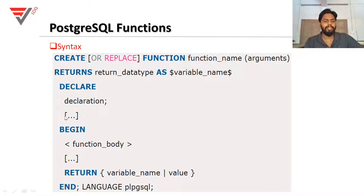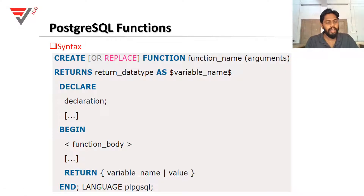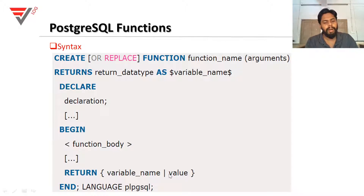Then in the program structure, the DECLARE section is where we declare variables. Then the BEGIN block, the body, then END. We have already covered the PL/pgSQL structure. When we define this particular function, the function is defined in the beginning. Then END semicolon. Then LANGUAGE PL/pgSQL. This is the syntax.